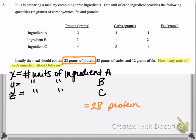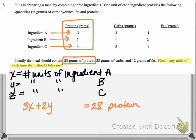So we need something to equal 28, the amount of protein in the meal. Looking at the table, the amount of protein is here in the first column. Ingredient A has three grams of protein, B has two, and C has four. Therefore we have three times X, since there are three grams of protein in every unit of ingredient A. 3X will be how much protein we get from ingredient A, plus 2Y, the amount of protein in ingredient B, plus 4Z. And we need that to equal 28.